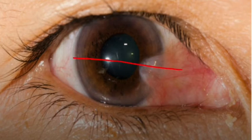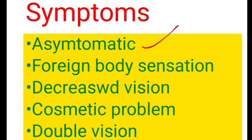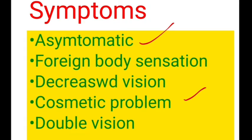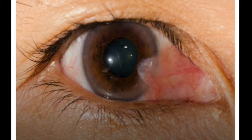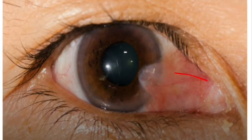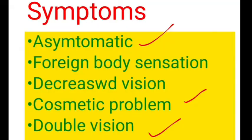The type of astigmatism caused by pterygium: the horizontal axis is flattened and the vertical axis becomes steep, producing with-the-rule astigmatism. So the two reasons for decreased vision are encroachment onto the pupillary area and astigmatism. Patients may also present with a cosmetic problem. Finally, patients can present with double vision when the pterygium infiltrates underlying structures such as the medial rectus muscle.